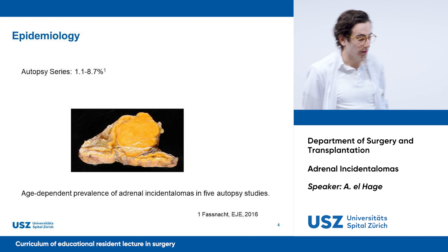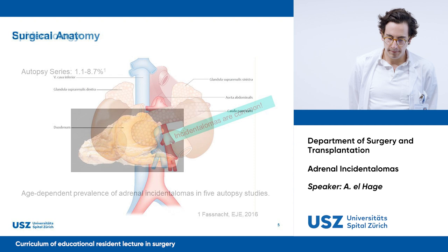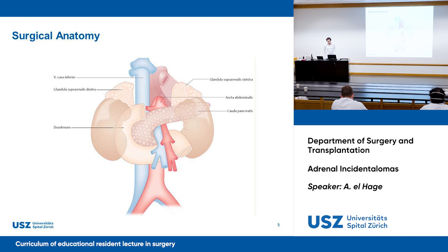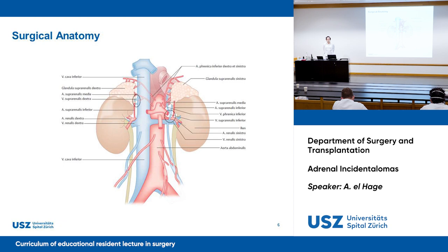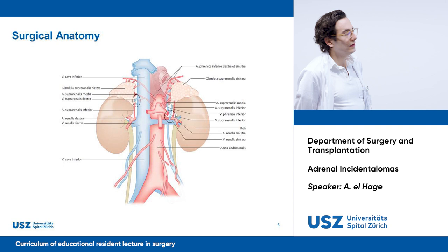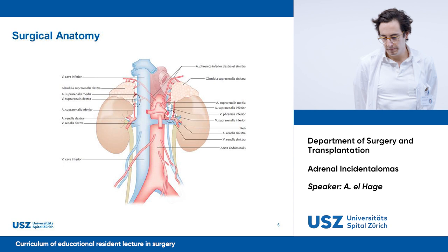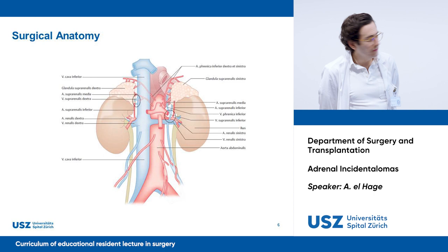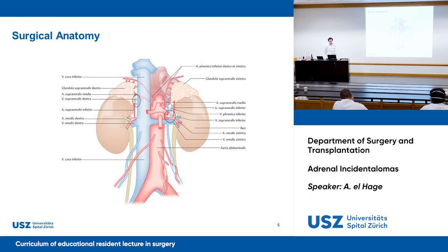Now let's have a look at the anatomy. They are localized in the retroperitoneum — on the left side in relation to the spleen and the tail of the pancreas, and on the right side, the liver and lateral to the vena cava inferior. Concerning vascularization, we have three arterial branches: a superior one from the inferior phrenic artery, a middle one from the aorta, and an inferior one from the renal arteries. The venous backflow differs: on the left it drains into the vena renalis sinistra, whereas on the right it goes straight into the vena cava inferior — important for the surgical approach.